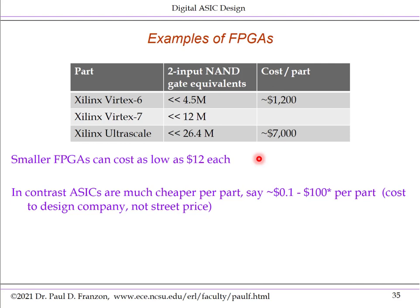Standard cell ASICs are much cheaper per part — as little as $0.10 per part, with really large ones perhaps $100 per part at fab cost. So FPGAs are modestly capable but can be quite expensive at the high end, whereas standard cell ASICs can be very cheap and very capable. It is common in the industry to use the term 'ASIC' specifically for standard cell ASICs and 'FPGA' for fully programmable ASICs.